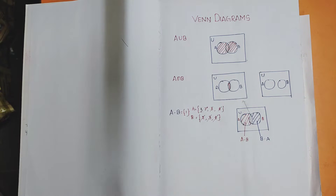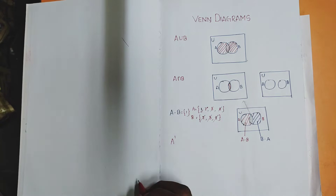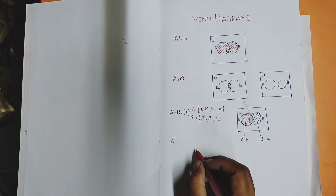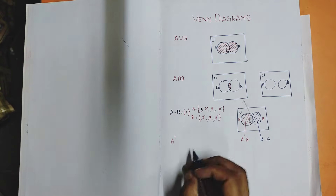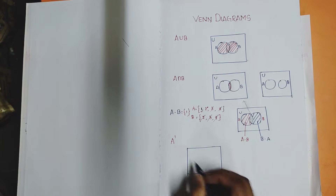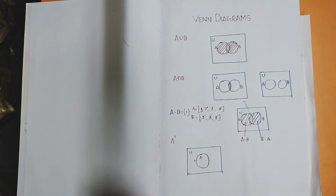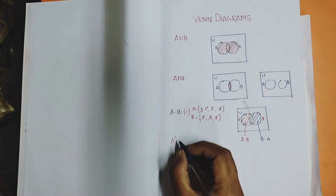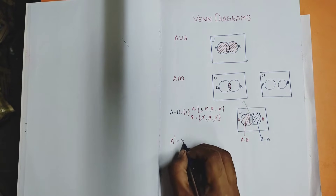Now let us see the Venn diagram for A complement. What is A complement? For all complements we should have the universal set. We draw a big box for the universal set and one circle for set A inside. The complement of A — also written as not A — means the elements which are not in A. A is always a subset of the universal set, so the complement is everything in the universal set remaining after A.